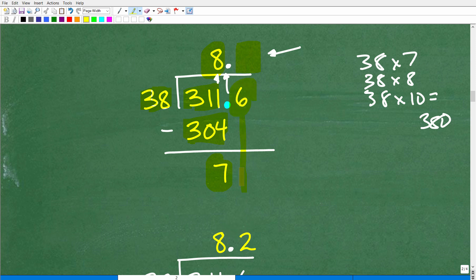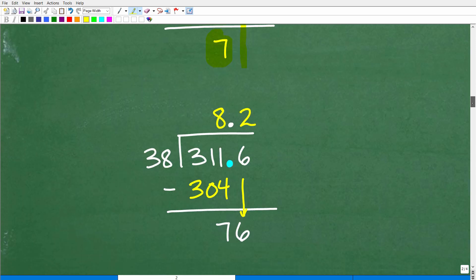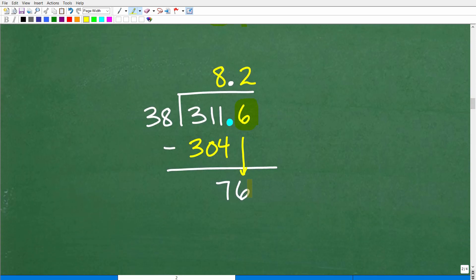We've got to drop that number down, right? 6. So, we've got to drop that number all the way down. This 6 here, so now we have 76. Now, we ask ourselves, 38 can go into 76. How many times? 2. Exactly 2 times. So, we're going to put our answer right there. So, the final answer is 8.2.